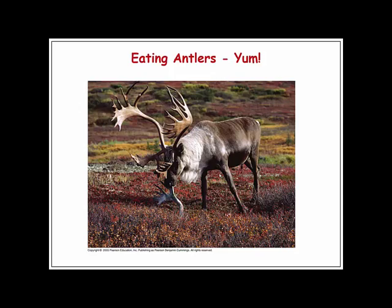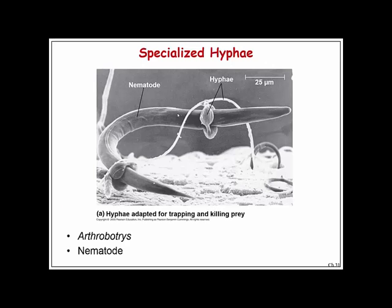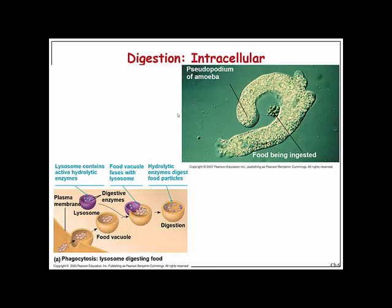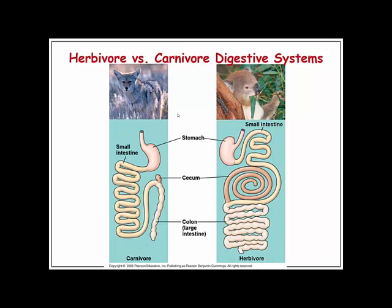Some organisms have interesting nutritional behaviors — this reindeer here eats old antlers to get the nutrients inside them. Sometimes unusual diets in certain organisms are because they are lacking nutrition. Also, be able to recognize different types of skulls and what organism types they belong to, and have an idea of the difference between a herbivore versus carnivore digestive system. Foods that herbivores eat are a lot harder to digest than what carnivores eat.